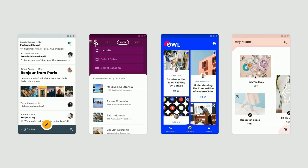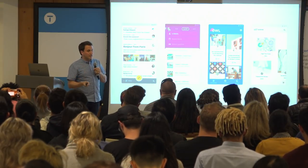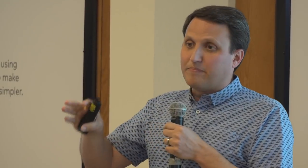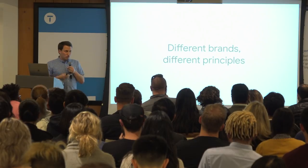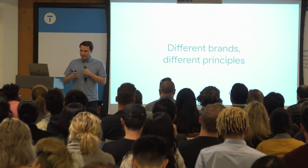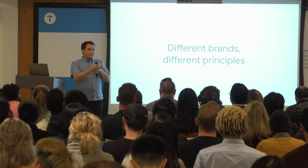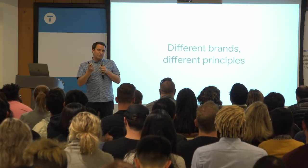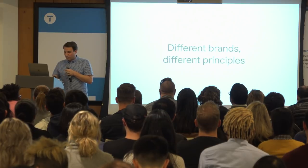Knowing that our users are designers themselves has affected how we think about design principles. Once you support customization and become expansive to include many possible brands, you need to make sure that the principles you define are going to be compatible with other values you just don't know. You don't know what values or principles your end users will want to bring to the system — whether that's Glassdoor wanting something valuable and simple, or Shopify pursuing different goals entirely.